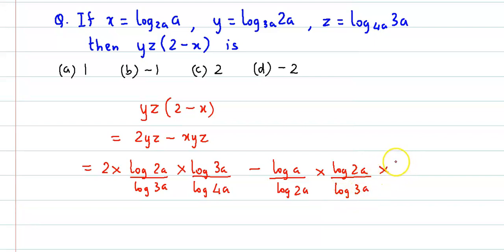And z will be log of 3a upon log of 4a. Now let us simplify this. This 3a and this 3a cancel out.